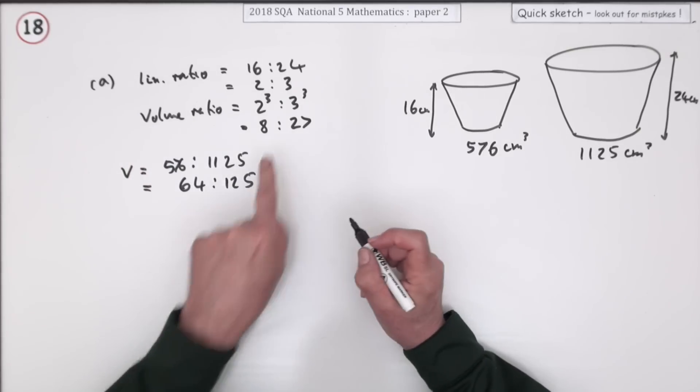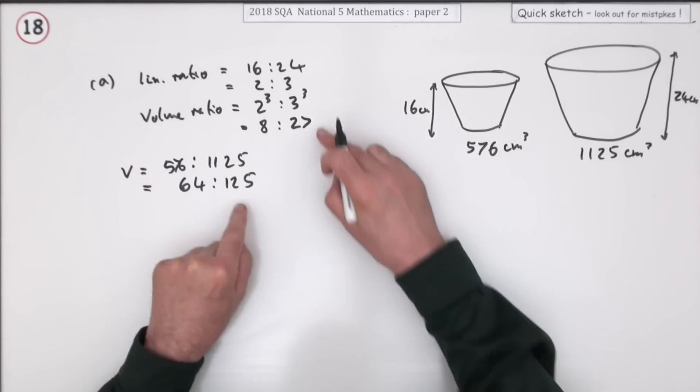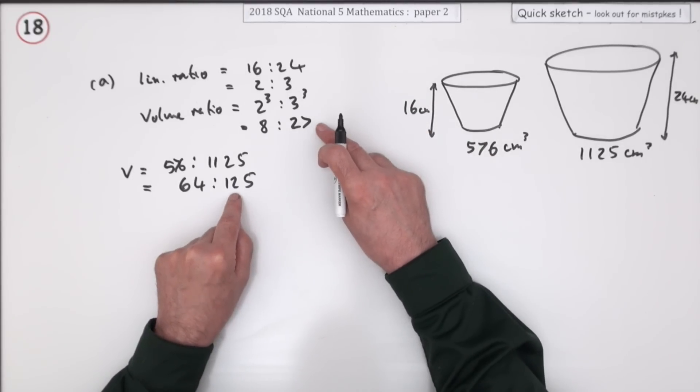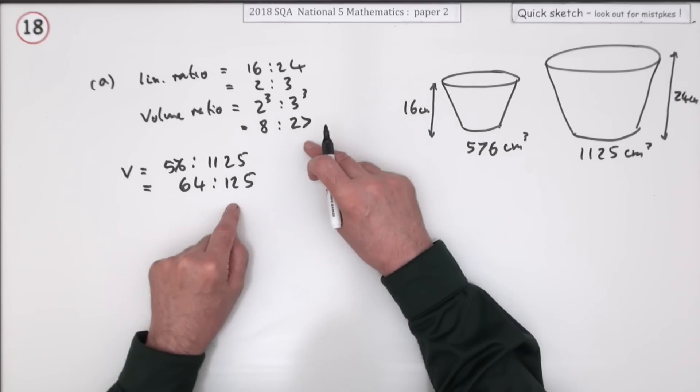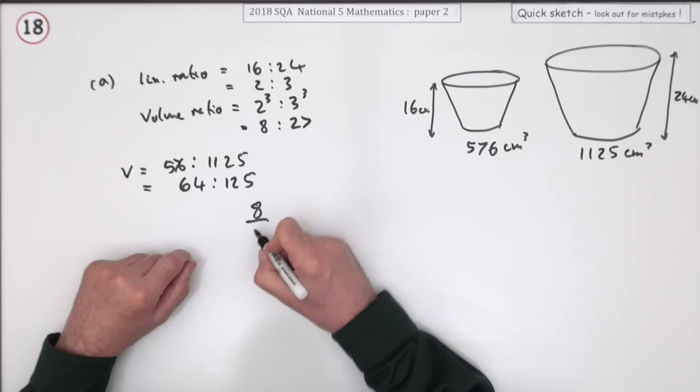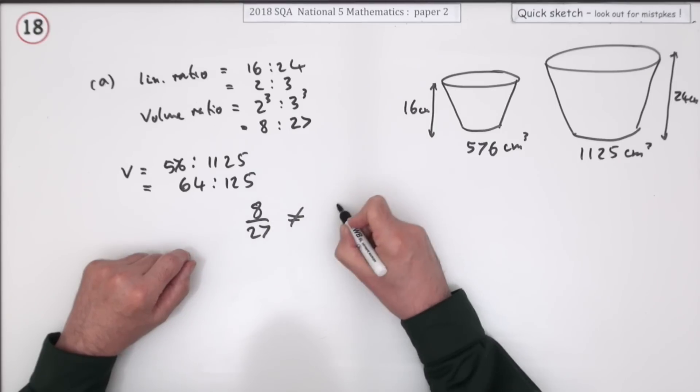Now that ratio is not the same as the expected ratio. You don't need to take them to the same denominator. If two fractions are in their fully simplified forms and the numbers are different, the fractions are different. So 8 over 27 is not equal to 64 over 125.